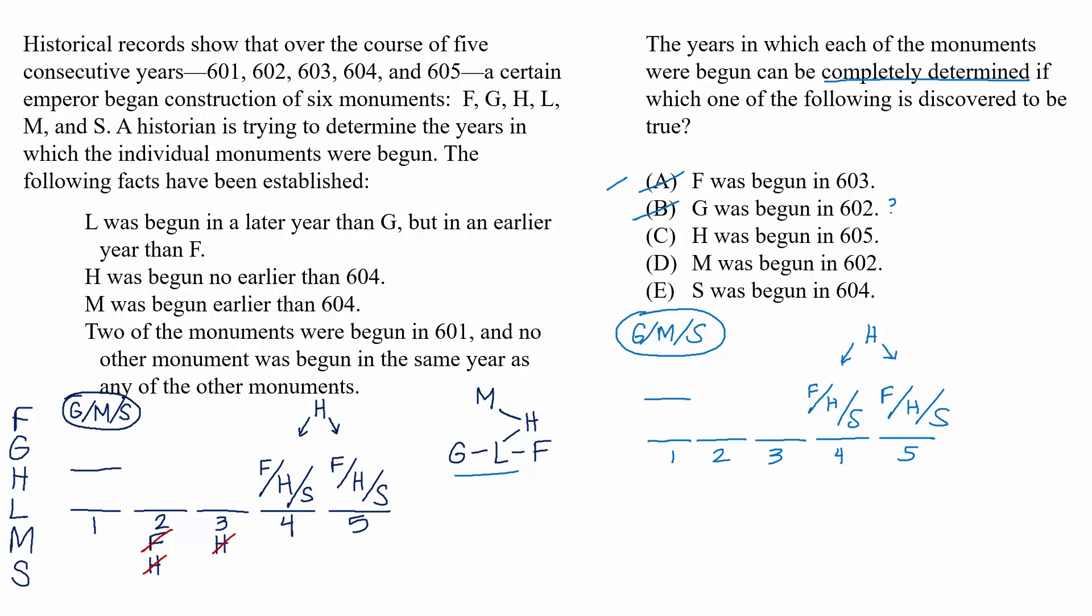C. H was begun in 605. Well, we can't deduce anything for certain from here. Either F or S could be in 604, for example. So there are just too many question marks here.